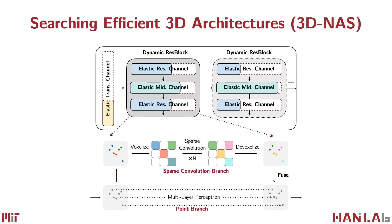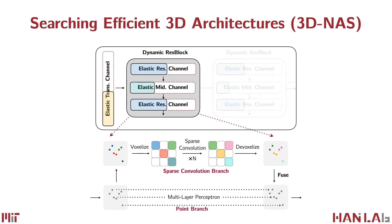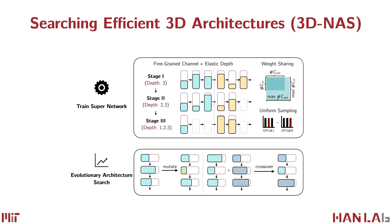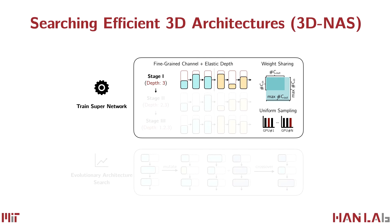We then propose 3D Neural Architecture Search, or in short, 3D NAS, to design efficient 3D architectures built with Sparse Point-Voxel Convolution. In the 3D NAS pipeline, we support searching for architectures with elastic number of channels and network depths. To achieve this, we decouple network training and architecture search. We train a supernetwork that supports fine-grained channel numbers and elastic network depths, and then search for the best network under efficiency constraints. Specifically, in supernetwork training, we use weight-sharing and uniform sampling techniques to jointly optimize a large number of subnetworks with different numbers of channels in our design space.